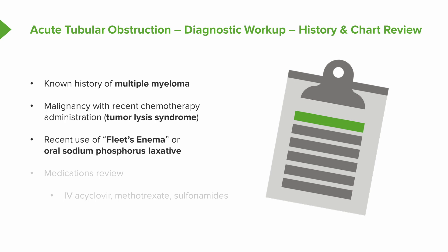Good detective work is especially important for patients coming in from a skilled nursing facility. It's not uncommon for nursing facilities to routinely administer enemas to prevent constipation. Those patients may have received a fleet enema or sodium phosphorus laxative that precipitated this phenomenon. So not just reviewing current hospital medications, but also reaching out to the nursing facility or other sources where the patient may have received these medications. You should also do a thorough medication review — looking at the MAR. Have patients received IV acyclovir, perhaps for HSV encephalitis? IV methotrexate for a malignancy? Or sulfonamide antibiotics?